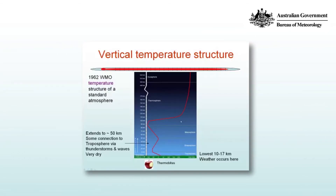Vertical structure of the atmosphere. What's shown in this figure are the various regions of the atmosphere together with a standard atmosphere temperature structure. That standard atmosphere was set down in 1962 by the World Meteorological Organization. Clearly, day to day the real atmosphere will vary quite widely from the standard atmosphere, but it gives us a handle on the basic structure.